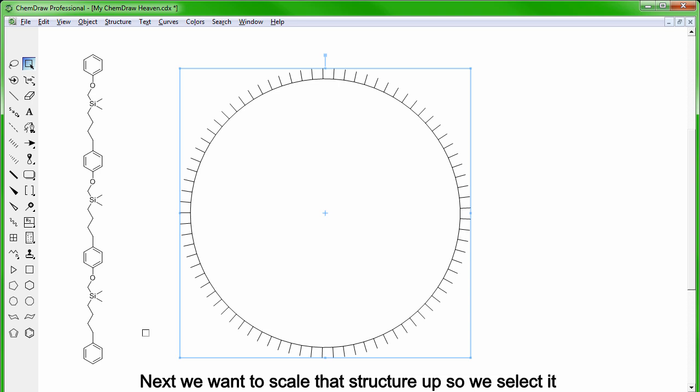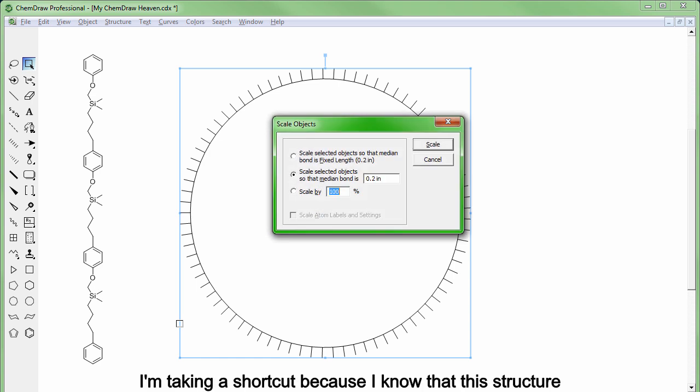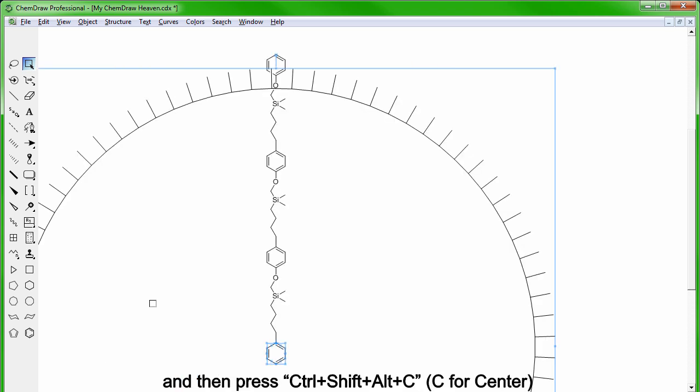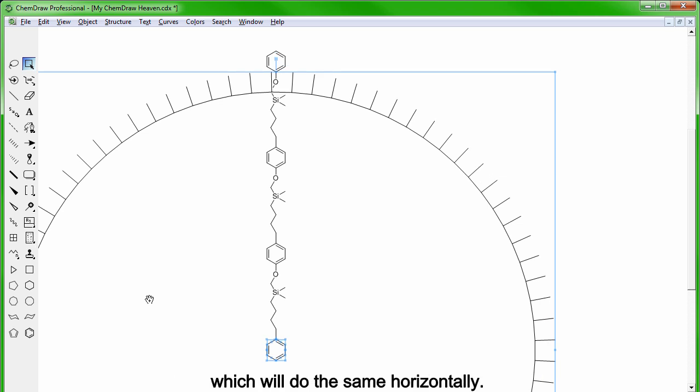Next we want to scale that structure up, so we select it and hit CTRL-K to bring up the scaling window. I'm taking a shortcut here because I know that this structure needs to be scaled up by 192%. The larger structure is now going to serve as a ruler for the rest of the dendrimer. And we're going to overlap now the centers of both the circular structure and the core benzene ring. To do that, we select both of them through additive selection and press CTRL-SHIFT-ALT-C, C for center, which is going to align the centers of both objects vertically, followed by CTRL-SHIFT-ALT-M, M for middle, which will do the same horizontally.